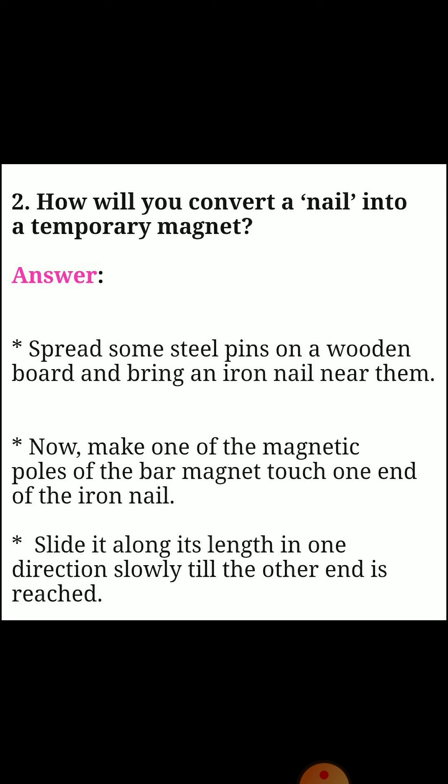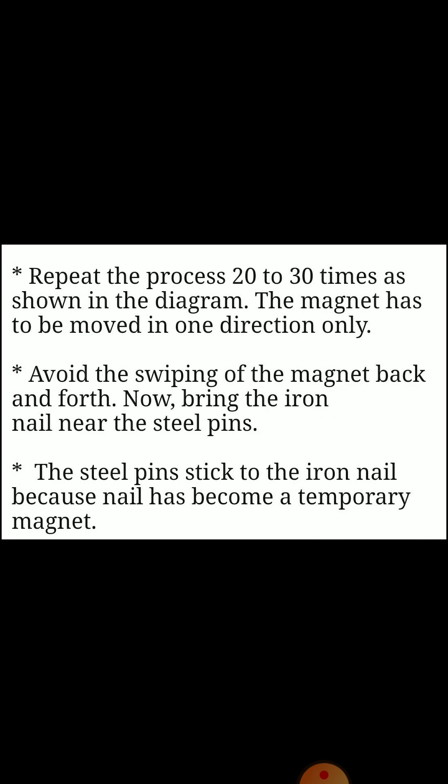Second question: how will you convert a nail into a temporary magnet? Answer: spread some steel pins on a wooden board and bring an iron nail near them. Make one of the magnetic poles of a bar magnet touch one end of the iron nail. Slide it along its length in one direction slowly till the other end is reached. Repeat the process 20 to 30 times. The magnet must be moved in one direction only — avoid swiping the magnet back and forth. Now bring the iron nail near the steel pins; the steel pins stick to the iron nail because it has become a temporary magnet.